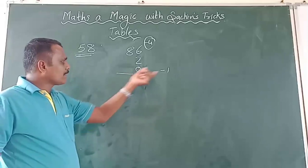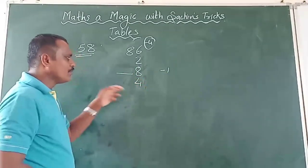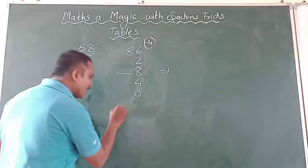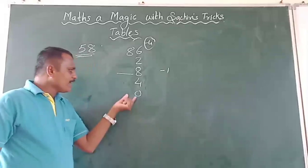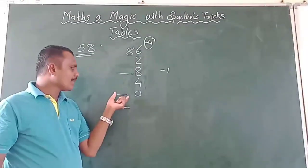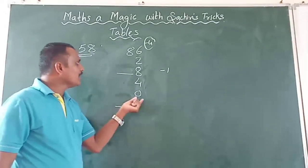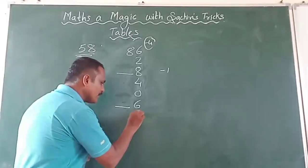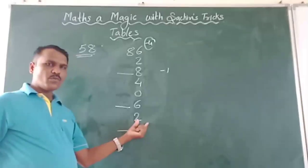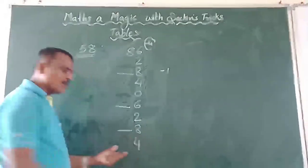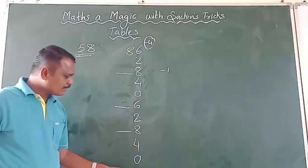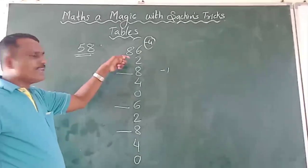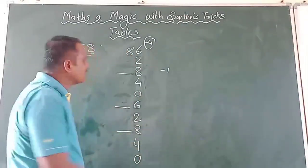Then 8 minus 4 is 4, 4 minus 4 is 0 — done 5 times. Again 0 minus 4 is not possible, so borrow again: 0 becomes 10, 10 minus 4 is 6, 6 minus 4 is 2, then 2 becomes 12 (borrow), 12 minus 4 is 8, 8 minus 4 is 4, 4 minus 4 is 0. Count: 1, 2, 3, 4, 5, 6, 7, 8, 9, 10 — done 10 times. The successor of 8 is 9, so I will add 9 at the tens place.